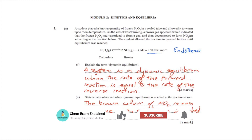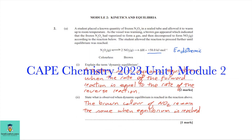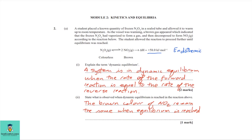Welcome back to Chem Exam Explained. In today's video we will be looking at 2023 CAPE Chemistry Unit One, Module Two: Kinetics and Equilibria. For question 2A, a student placed a known quantity of frozen N2O4 — dinitrogen tetraoxide — in a sealed tube and allowed it to warm up to room temperature. A brown gas appeared, indicating that the N2O4 had vaporized and then decomposed to form NO2 (nitrogen dioxide). The student allowed the reaction to proceed until equilibrium was reached.